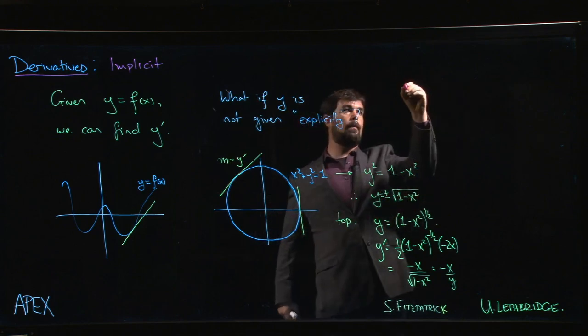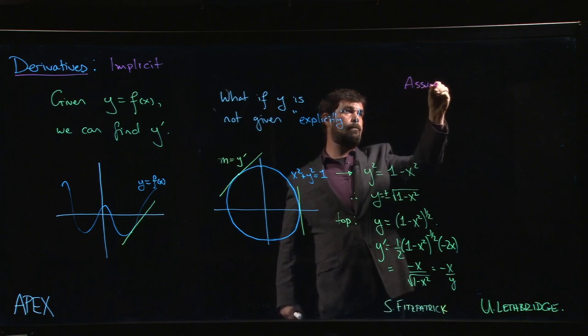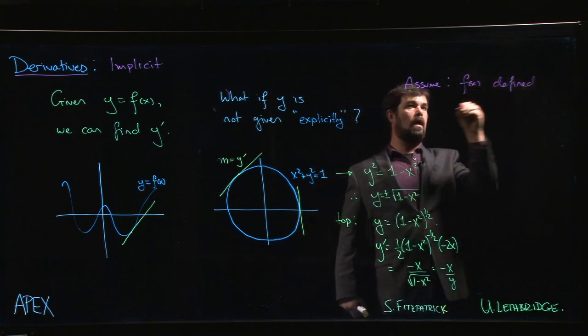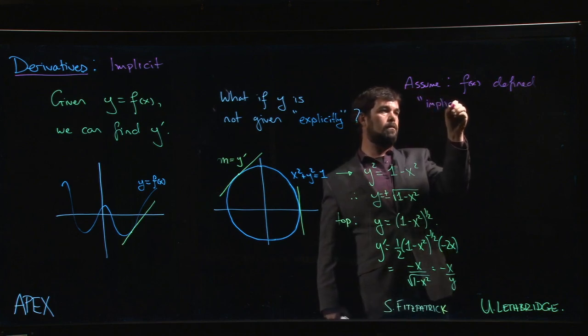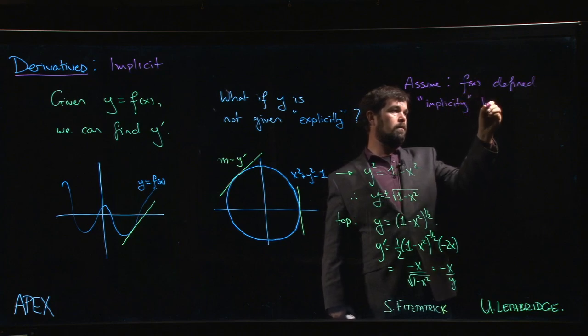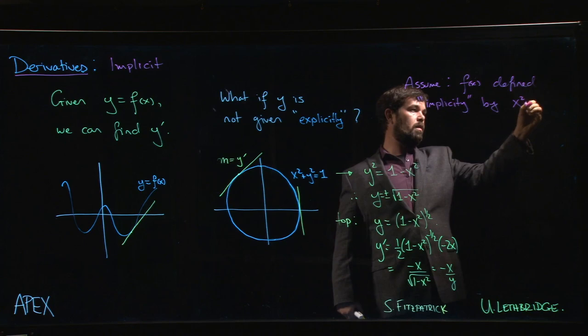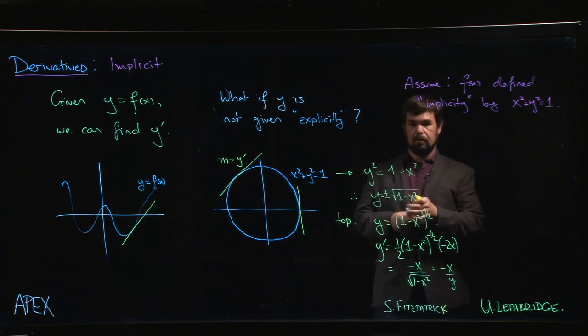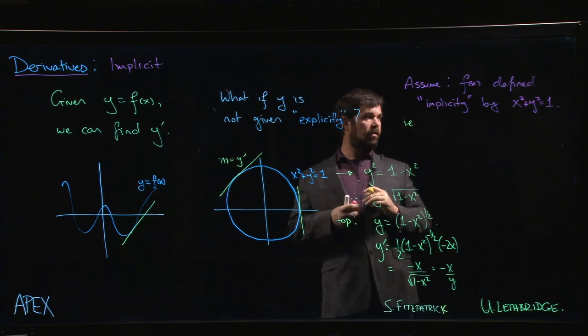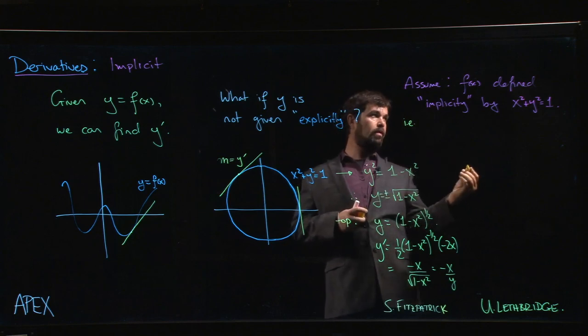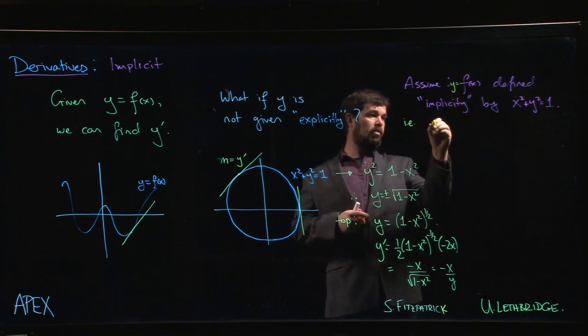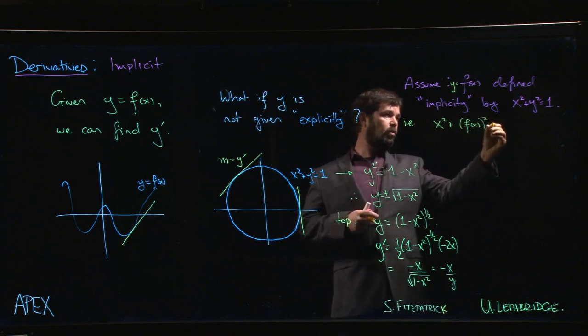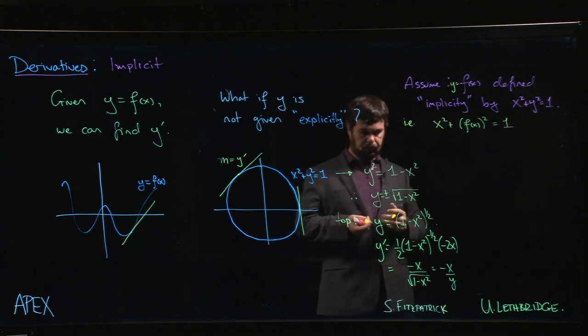We assume that there's some function f of x which is defined implicitly by the equation x squared plus y squared equals one. What we mean by that is that setting y equal to f of x satisfies the equation. So what we're saying is that there is some function f of x so that x squared plus f of x squared will give you one.